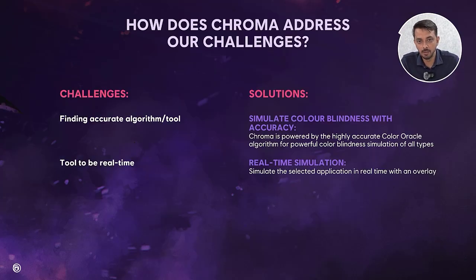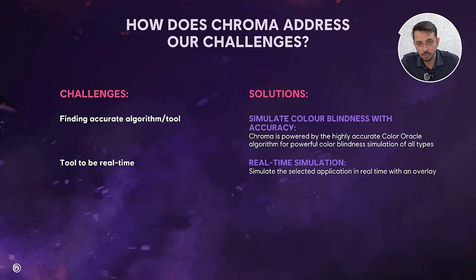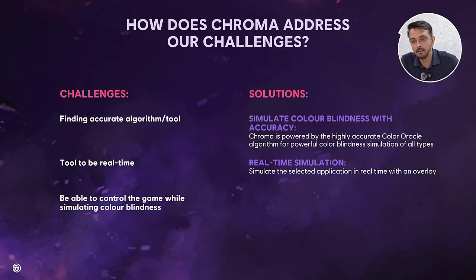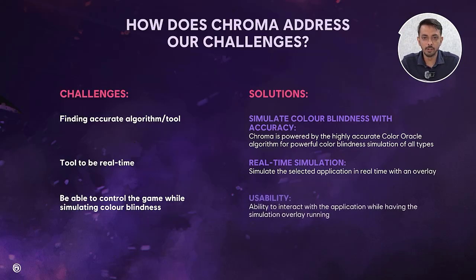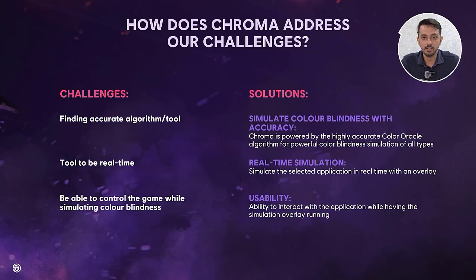Due to the dynamic nature of the game, this often required redoing the test steps and recreating the same scenarios. The last challenge to address was the ability to interact with the game while simulating colorblindness. With Chroma, users can interact with the application while the simulation overlay is running, ensuring a seamless testing experience without the need to switch back and forth between multiple applications. This real-time overlay maintains testing continuity and quality, addressing the challenges posed by non-real-time tools.